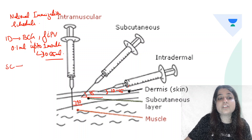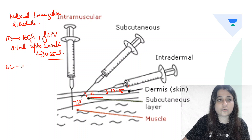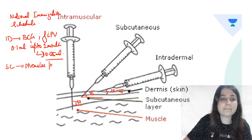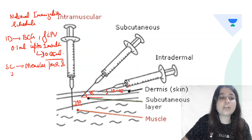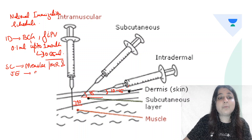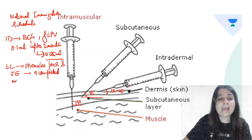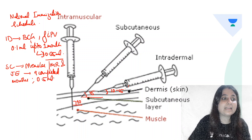Now name some vaccines which are given subcutaneously. There are 2 — measles vaccine, or measles-rubella, and Japanese encephalitis. Both are given at 9 completed months, and the dose for both of them is 0.5 ml.